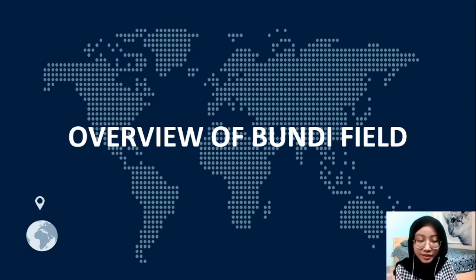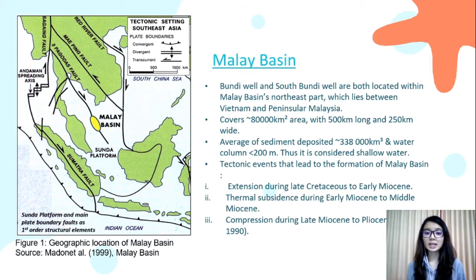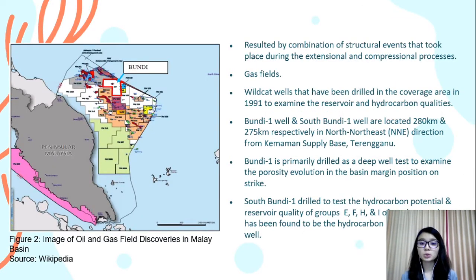First, we will present the overview of Bundyfield. Bundyfield and South Bundyfield are both located within the Malay Basin northeast part. The Malay Basin is considered shallow water. The tectonic events that led to its formation include extension during late Cretaceous to early Miocene, thermal subsidence during early to middle Miocene, and compression during late Miocene to Pliocene. Both Bundyfield and South Bundyfield are gas fields, located in a north-northeast direction from Kemaman.